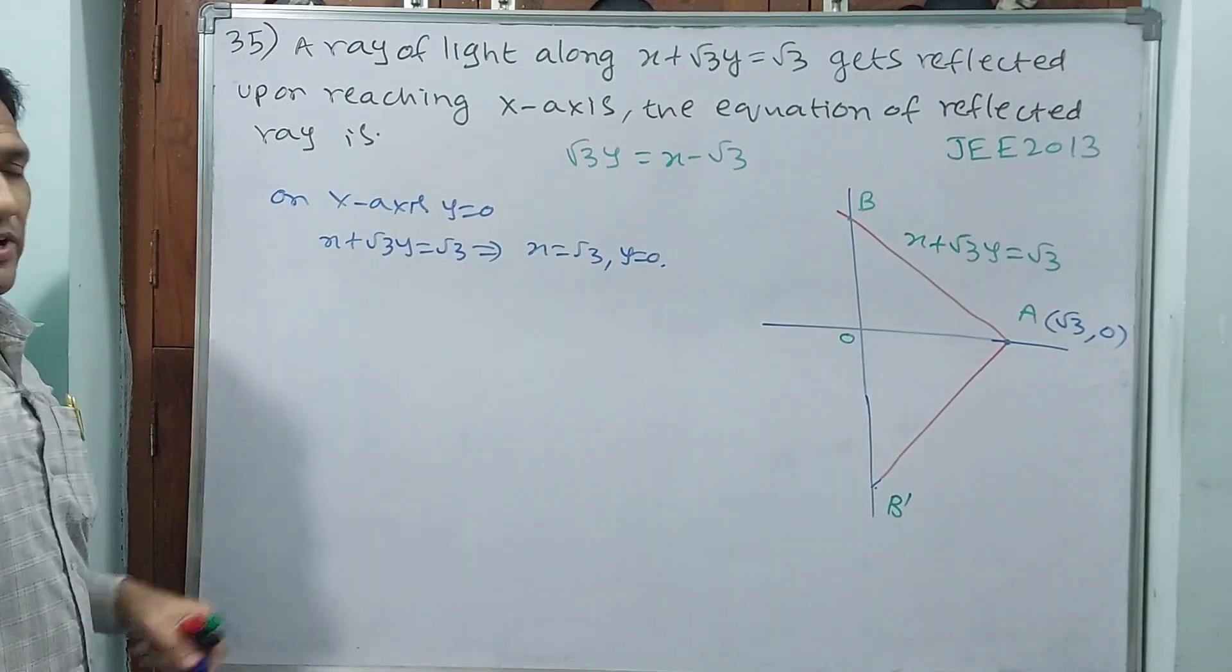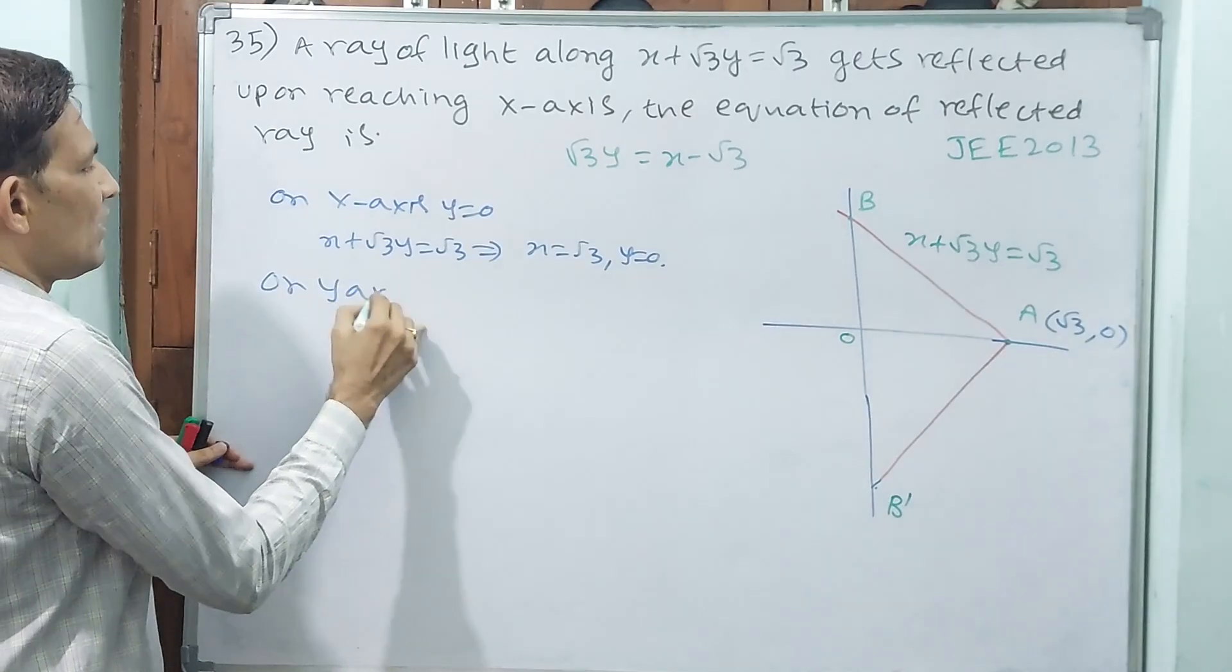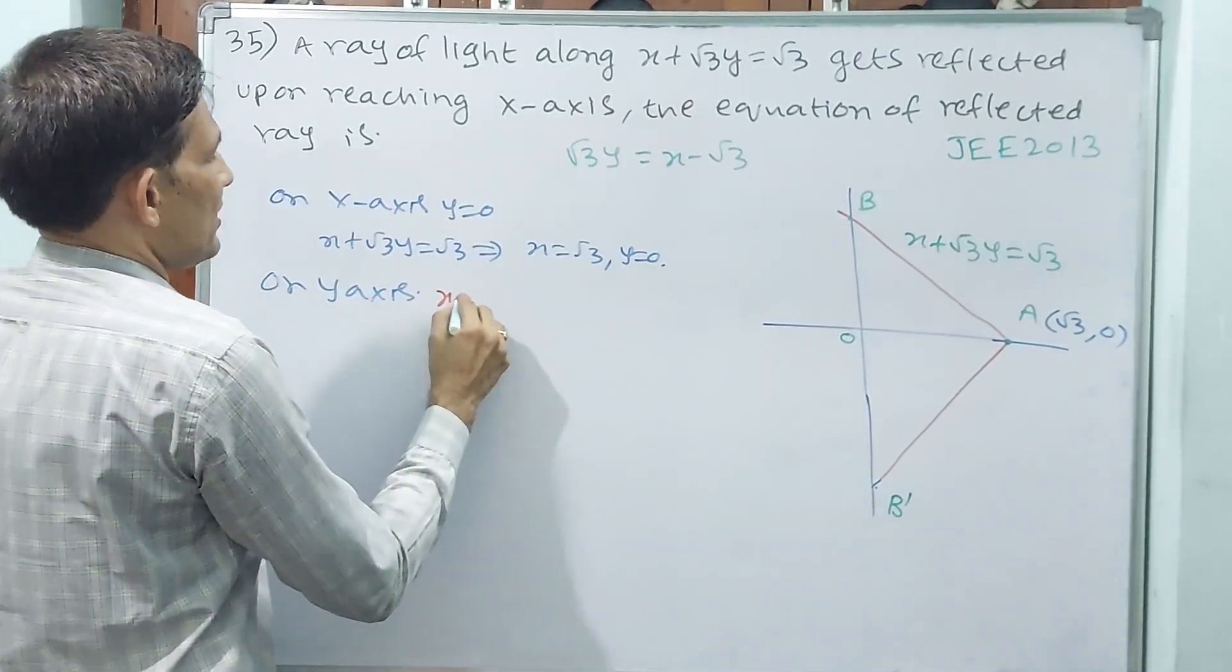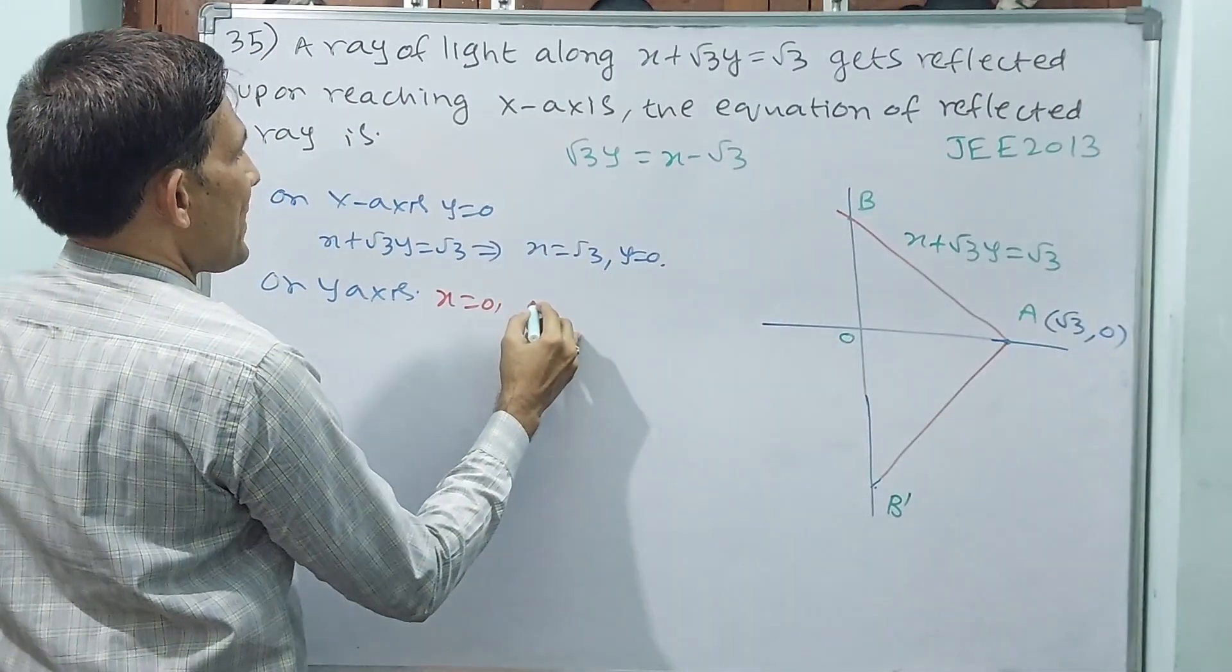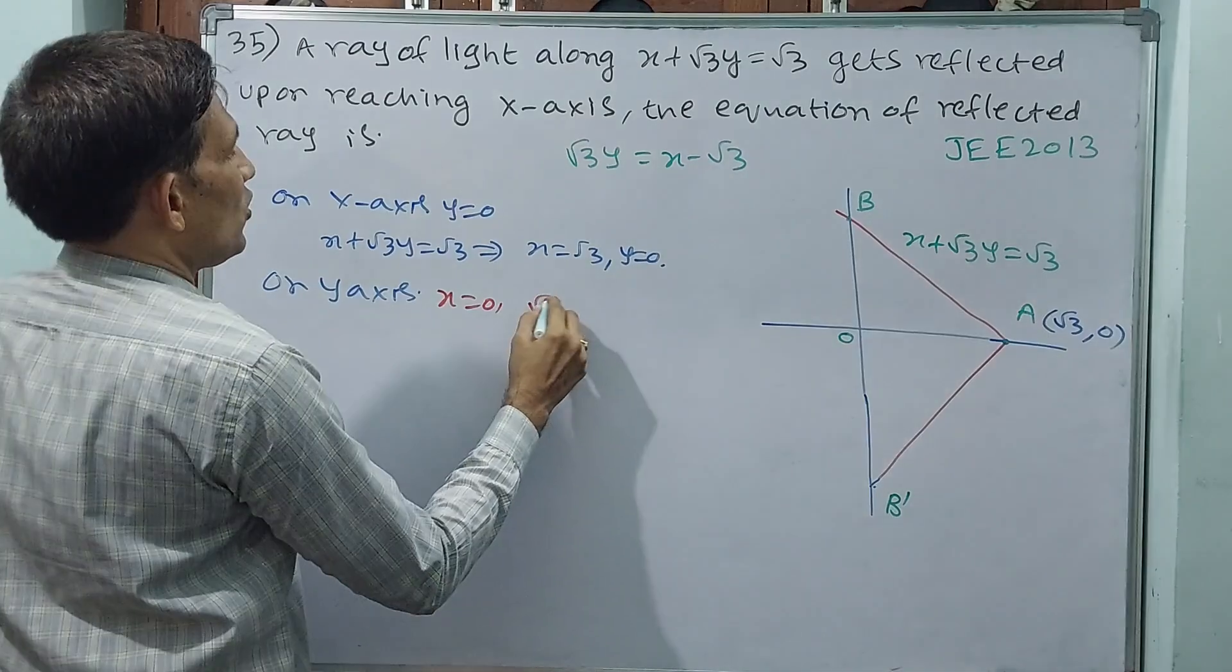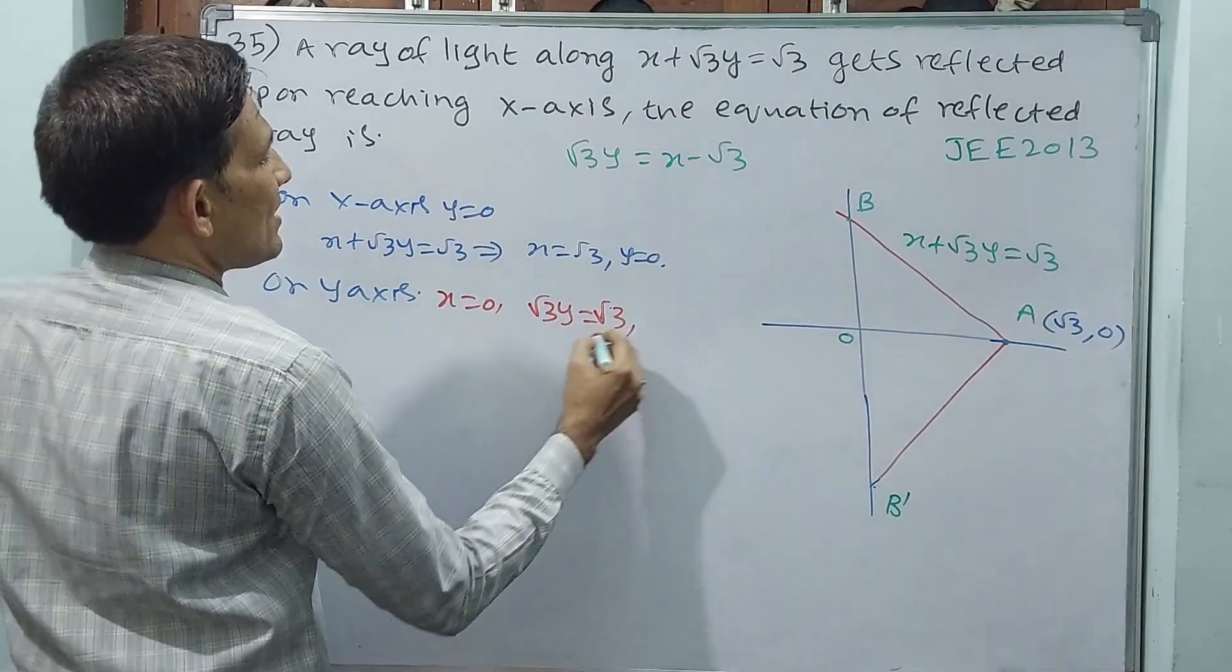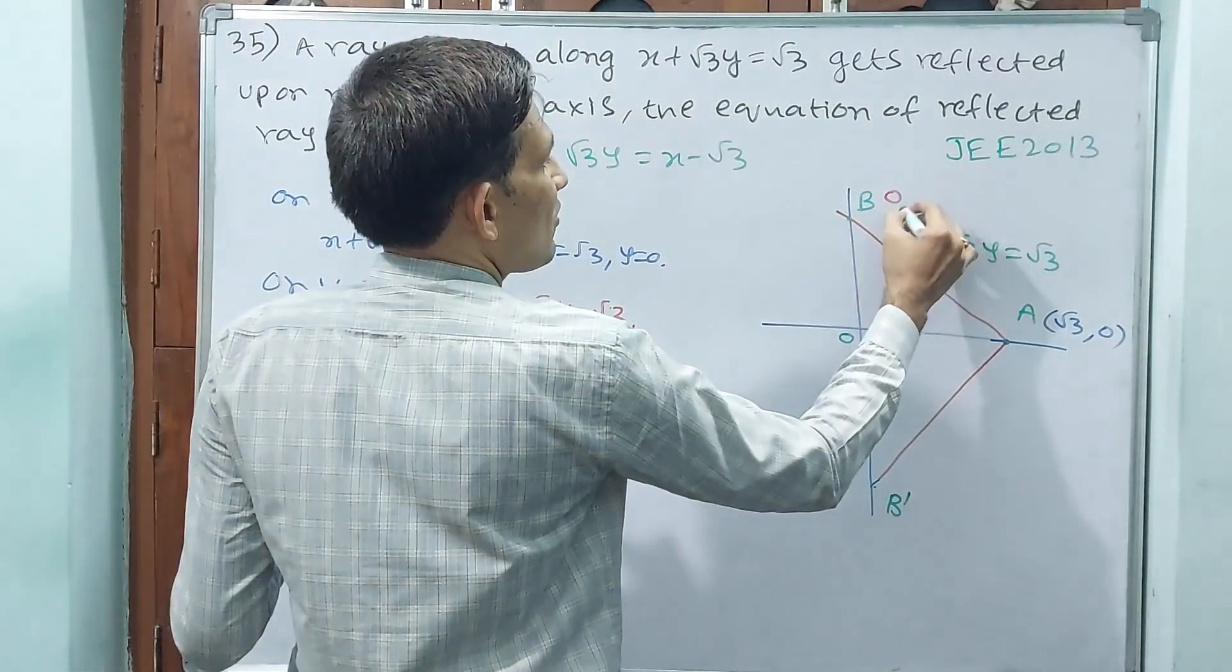This is the case on x-axis. What about on y-axis? On y-axis, x equals 0, x is 0, y equals 1.